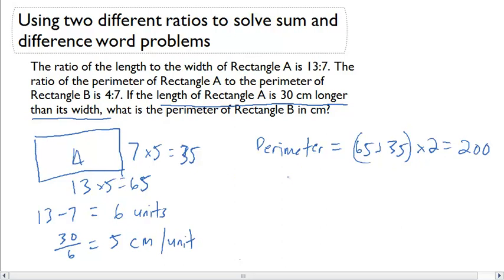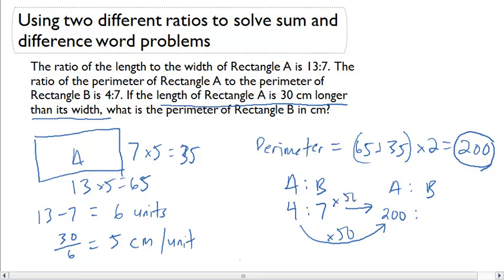Now, the perimeter of A to the perimeter of B is in a ratio of 4 to 7. We can now use this to find an equivalent ratio based on the perimeter that we found for A. A, we know, has to be 200. What do I have to multiply by to go from 4 to 200? I multiplied by 50, which means I have to multiply the 7 by 50. And that's going to give me 350. The perimeter of Rectangle B is 350 centimeters.